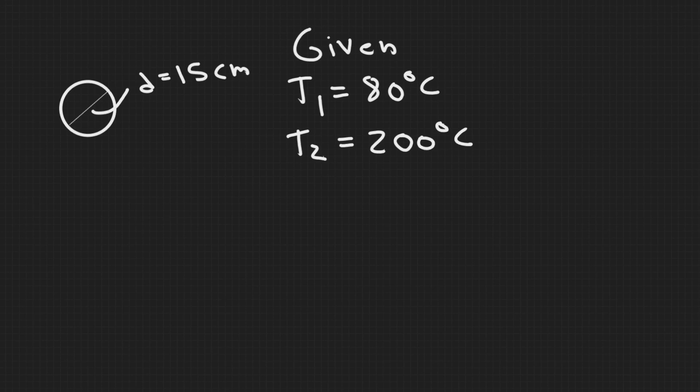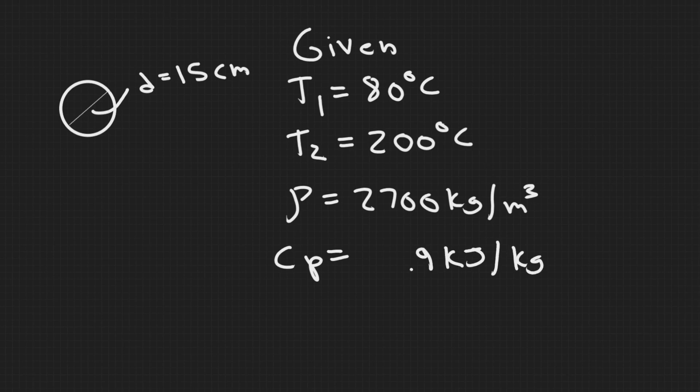We know that the average density and specific heat, so we're given these values. ρ is this right here, so let's write that out, 2700 kilogram per meter cubed. And we're given the specific heat is 0.9 kilojoules per kilogram K.